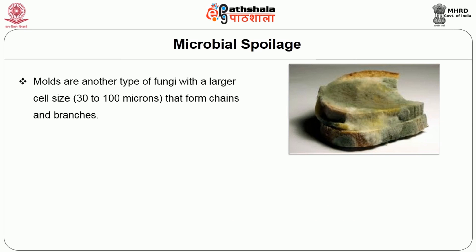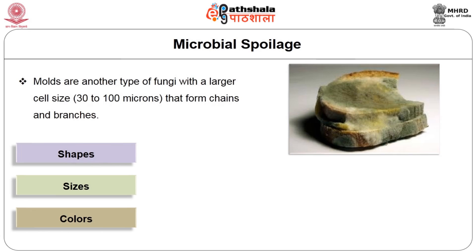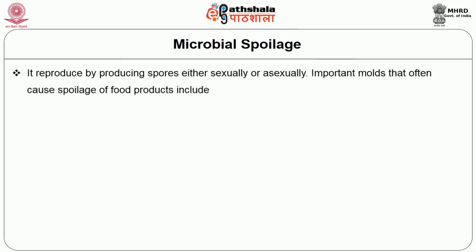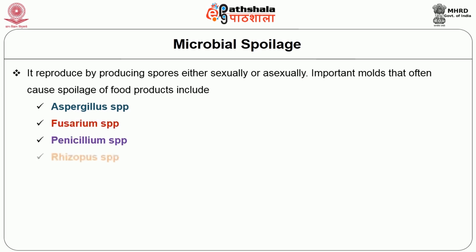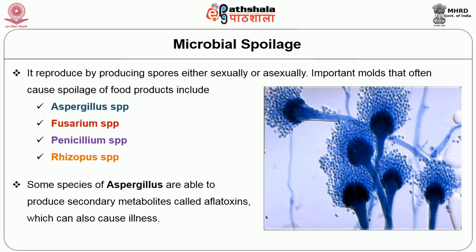Molds are another type of fungi with a larger cell size that form chains and branches. Molds come in many different shapes, sizes, and colors, and they can be seen with the naked eye when they form their branched structure. Molds reproduce by producing spores either sexually or asexually. Important molds that often cause spoilage of food products include Aspergillus species, Fusarium species, Penicillium species, and Rhizopus species. Some species of Aspergillus are able to produce secondary metabolites called aflatoxins, which can also cause illness.